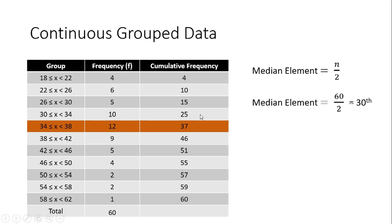Using the cumulative frequency column — 4, 10, 15, 25, 37 — we cannot exactly find the 30th element, but we can find the group that contains it. The group 34 to 38 contains the 30th element. Using an equation we can find the exact median value.